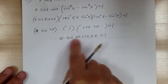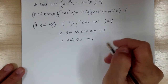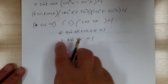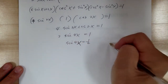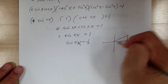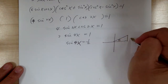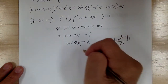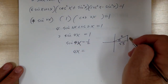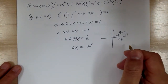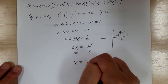This is the double angle formula again: 2 sine 4x equals 1. Dividing by 2, sine 4x equals 1/2. Think of 4x as theta, so sine theta equals 1/2, which means theta equals 30°. Dividing by 4, x equals 7.5 degrees.